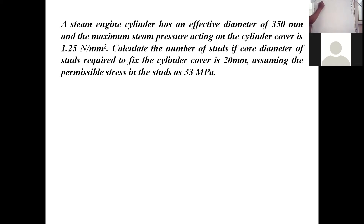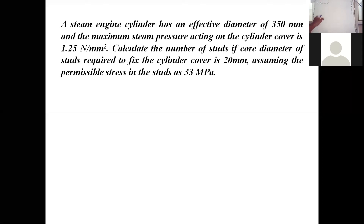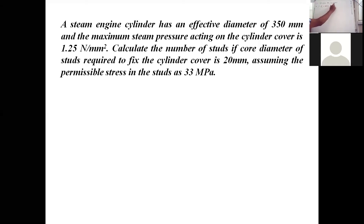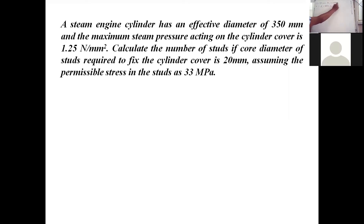So let us write all the given data. The diameter d is 350 mm — this is the diameter of the steam engine cylinder cover. The pressure is 1.25 newton per mm square. We have to find the number of studs. The core diameter of one stud is 20 mm, and the permissible stress in one stud is 33 MPa.